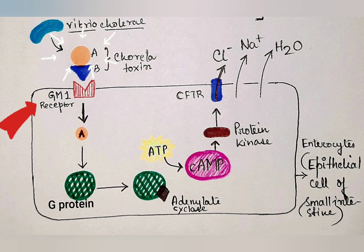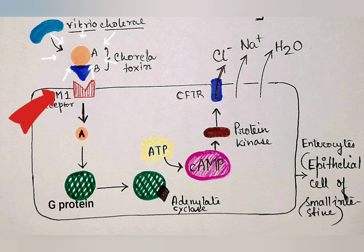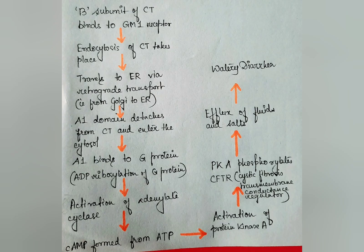The entire cholera toxin with its A and B units does not enter the cytosol. Only the A1 domain detaches from the cholera toxin molecule, enters into the cytosol, and binds to the G protein. This process is called ADP ribosylation of the G protein.